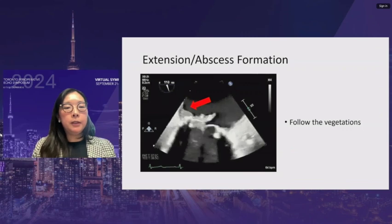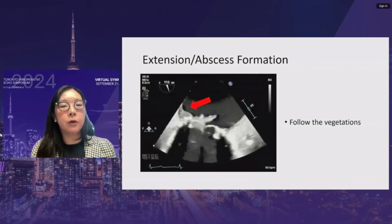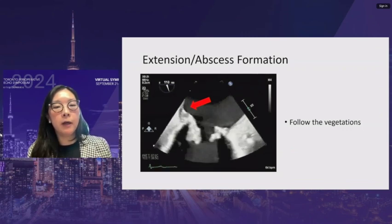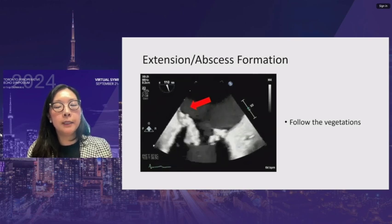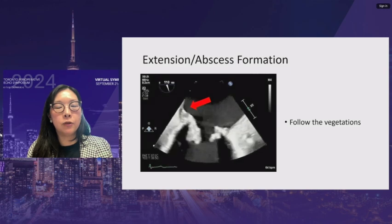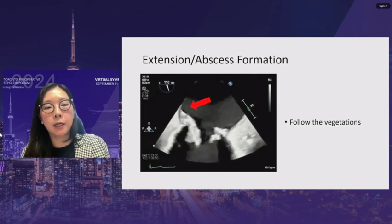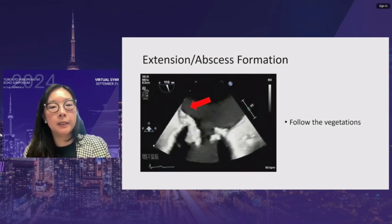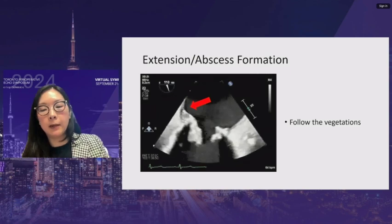When examining vegetations, sweep along to assess extension. This bioprosthetic mitral valve is infected, with vegetation covering the entire leaflet on both sides, extending across the annulus and up the atrial wall. It is important to look for extension into the annular areas, as this is where abscesses will form.